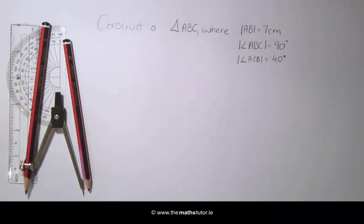We are going to construct a right angle triangle giving one side and one of the acute angles. In this example we are going to construct a triangle ABC where the side AB is 7cm, the angle ABC is 90 degrees and the angle ACB is 40 degrees.